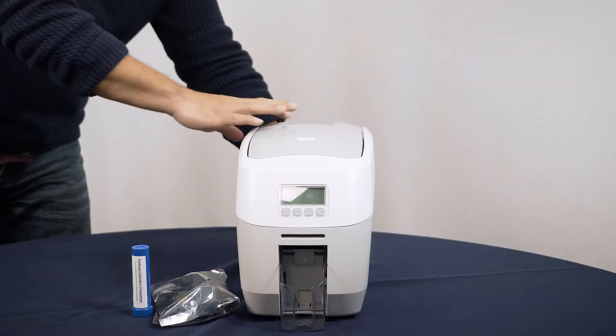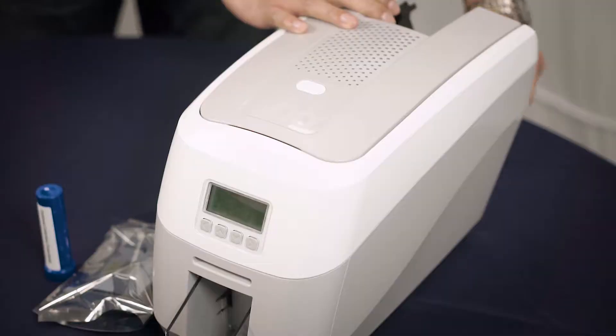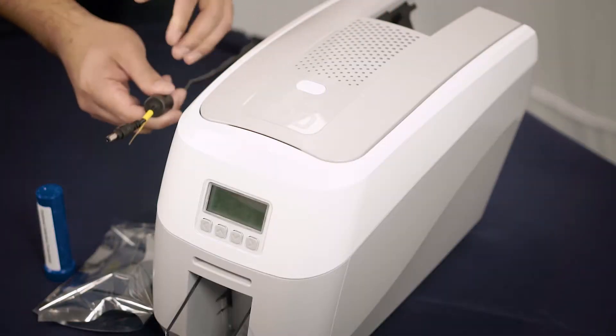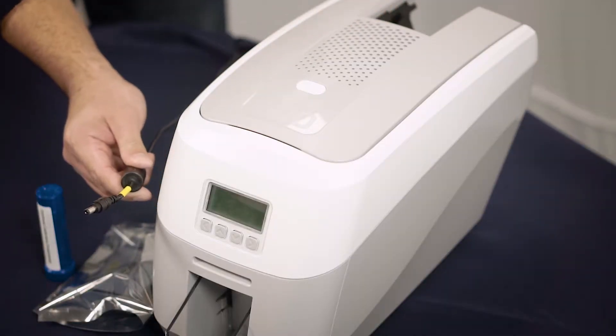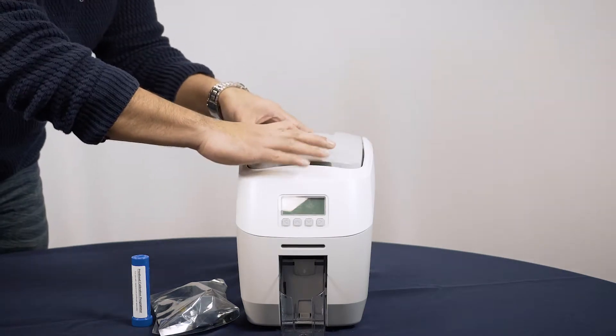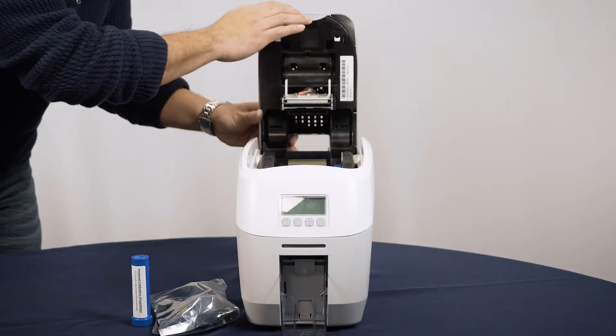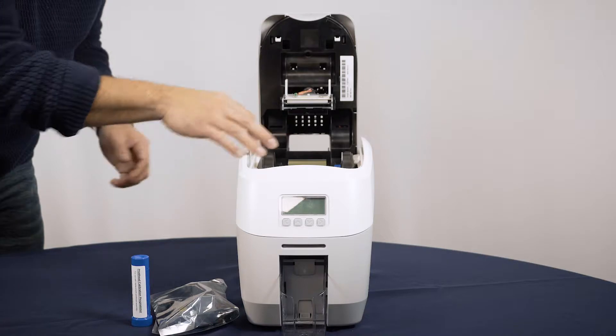Disconnect the power supply by removing the cable from the rear of the printer. Open the lid to the printer, you'll see the print head attached to the chassis cover. Remove the die film.